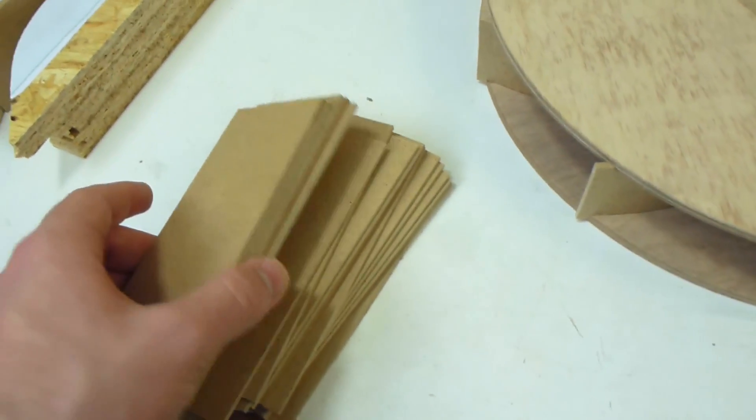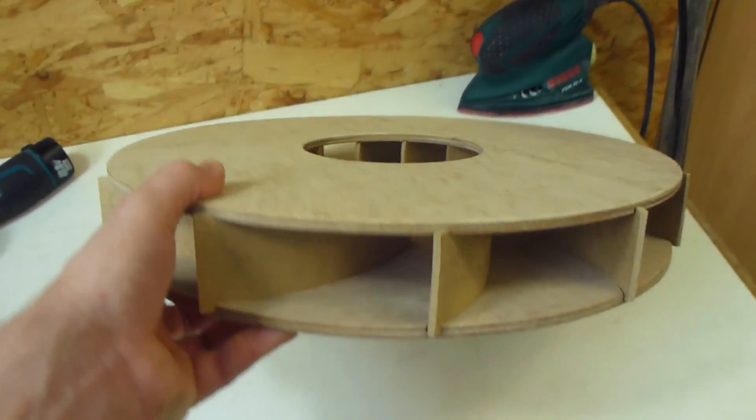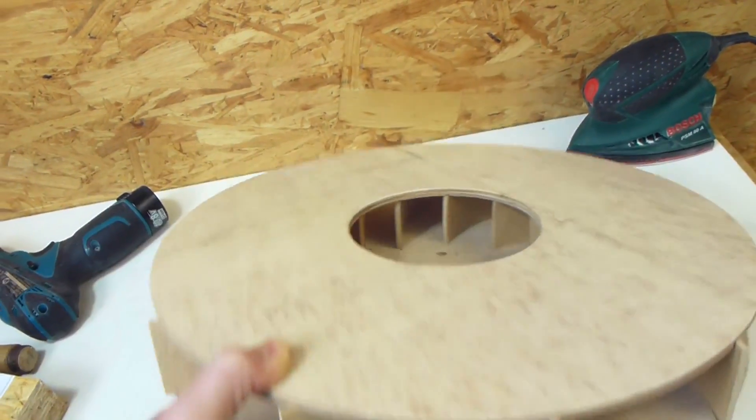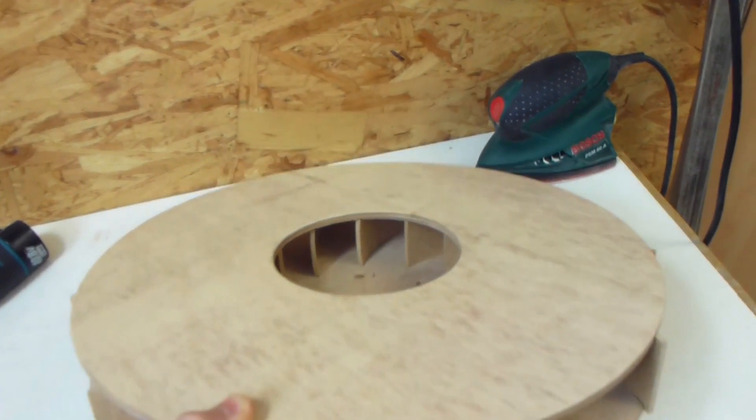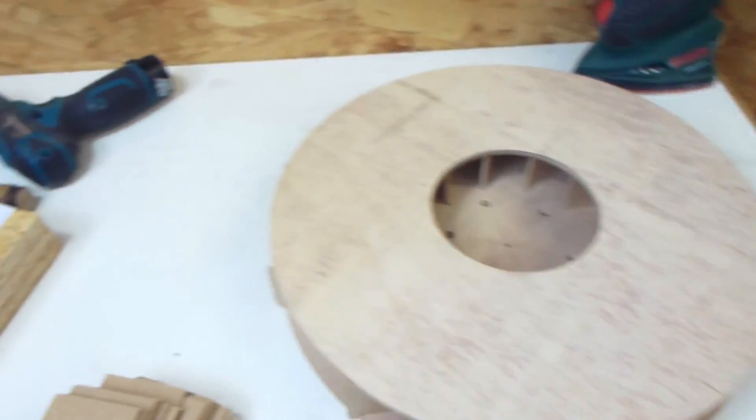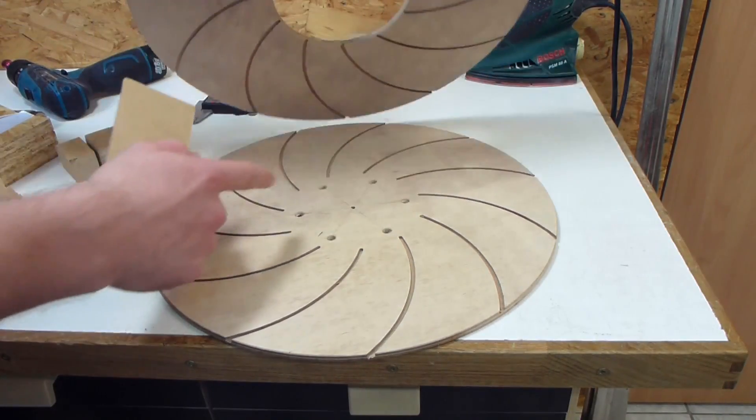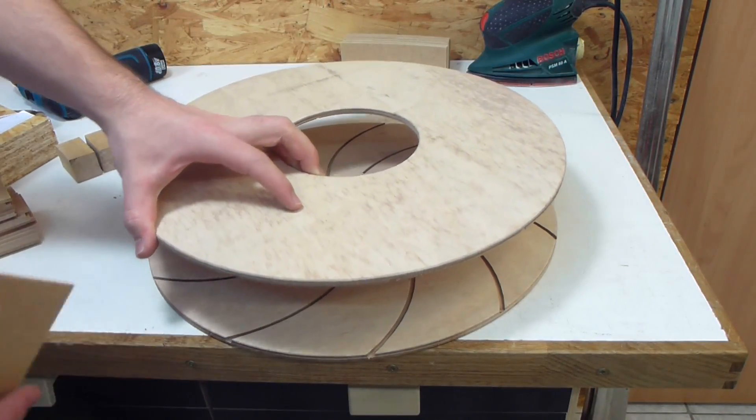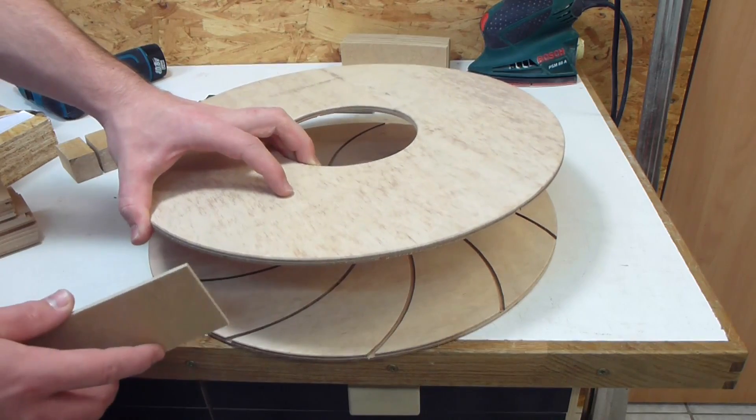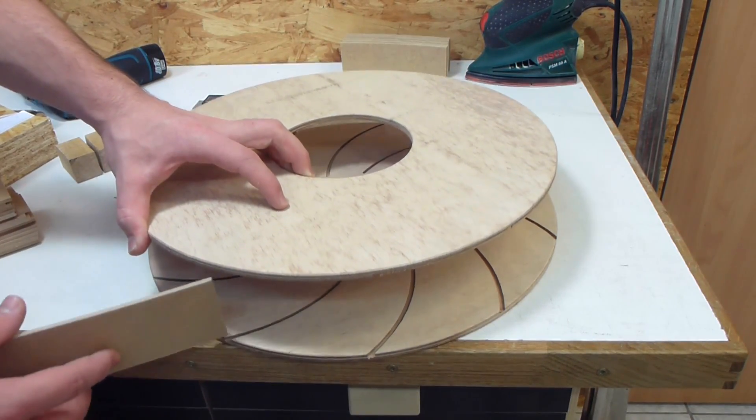Next I need to put all these vanes in between the discs. And I already tried it out with some thinner ones and so I could work out a method that works reasonably well and doesn't require a bending form. Now I need to line up all these grooves with each other and somehow fix this top disc at a distance so that I can then slide in the vanes.